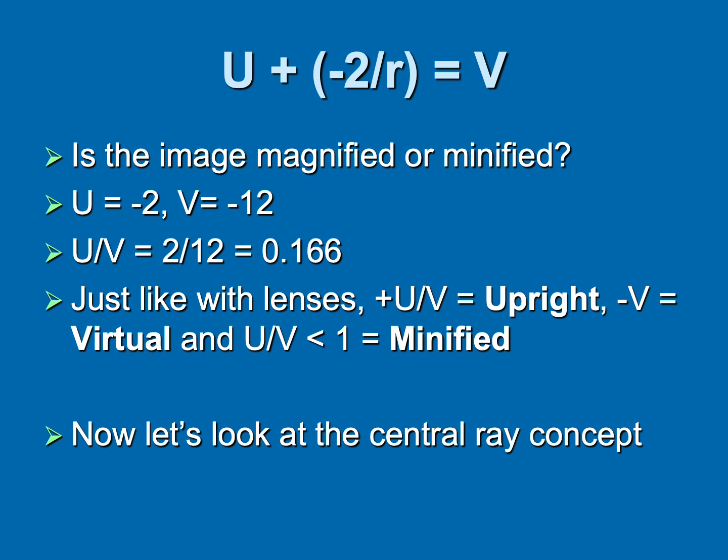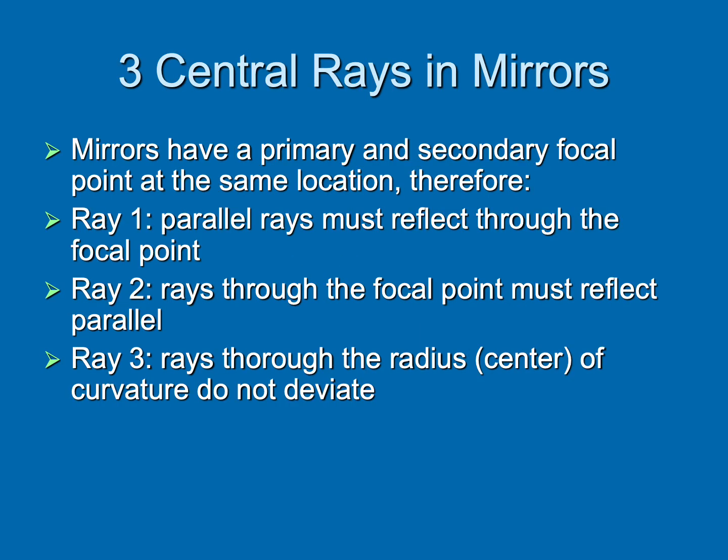If you want to know mathematically, is it magnified or minified, it's still u over v and less than one is minified, just like with lenses. Central ray concept. This is going to be your best friend when it comes to mirror problems. This slide is incredibly important. If you remember nothing else during this lecture, remember these three rays. Here's a weird thing about mirrors. Like lenses, they have a primary and secondary focal point. But for a mirror, it's at the same location. It's only one focal point.